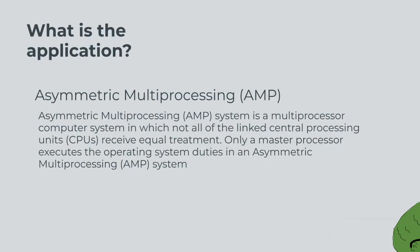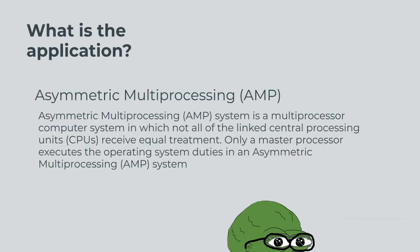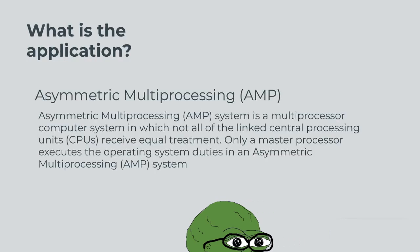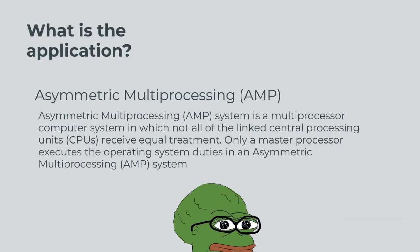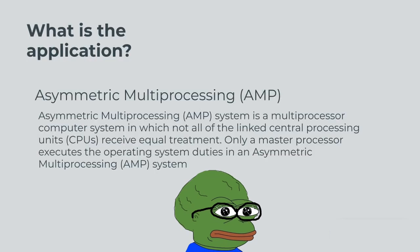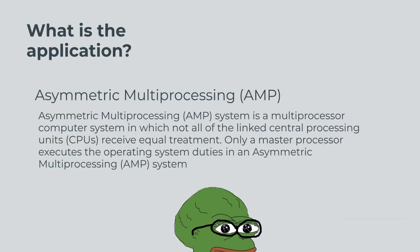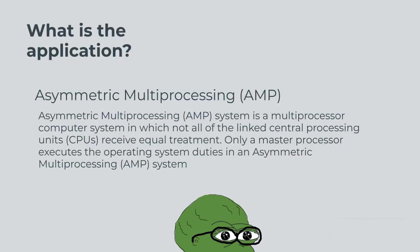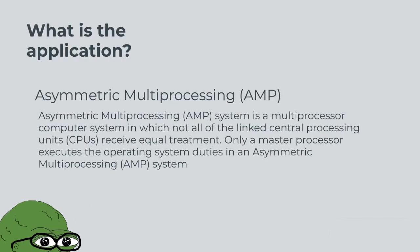What is the application? An asymmetric multiprocessing system is a multiprocessor computer system in which not all of the linked central processing units receive equal treatment. Only a master processor executes the operating system duties in an asymmetric multiprocessing system.